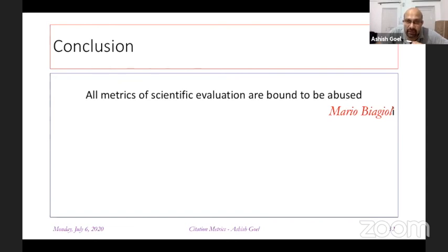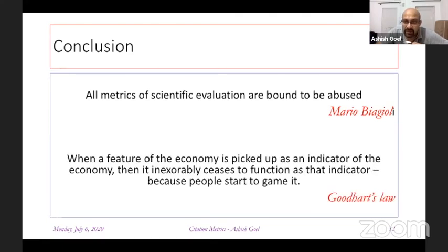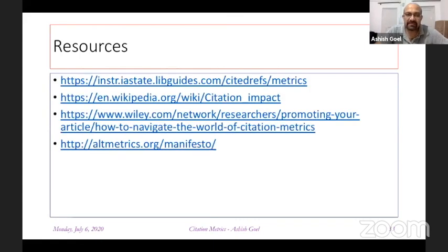To conclude: all metrics of scientific evaluation are bound to be abused, as stated by Mario Biagioli. This is based on Goodhart's Law, which says that when a feature of the economy is picked up as an indicator, it inexorably ceases to function as that indicator, because people start to game it. With that, this presentation comes to an end.